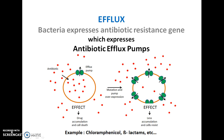The third form of adaptation is efflux. Bacteria express antibiotic resistance genes that develop antibiotic efflux pumps. These pumps efflux out antibiotics that have accumulated inside the cell. Without efflux pumps, antibiotics accumulate and cause protein synthesis inhibition or other mechanisms leading to bacterial cell death. With efflux pumps, the antibiotic that entered the cell is rapidly pumped out, resulting in less accumulation and resistance. Examples include florfenicol and beta-lactamines.